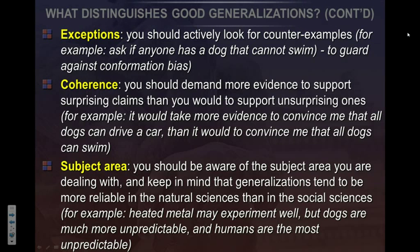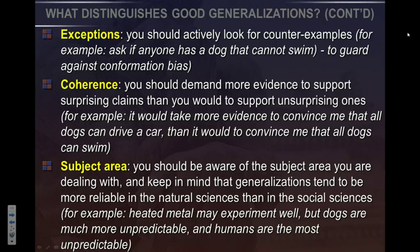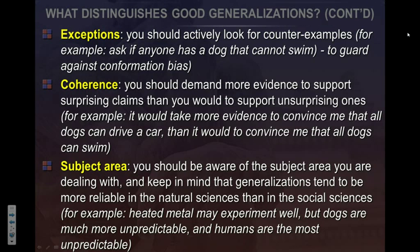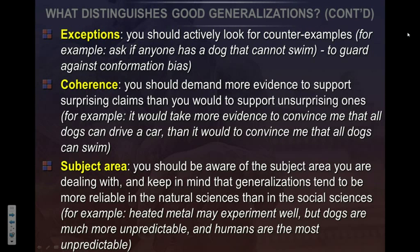And then there's coherence — does it make sense? Can dogs actually swim? It seems to make sense; they appear to have the musculature and genetics to do it. But if you said 'all dogs can drive cars,' that doesn't fit, even if you've seen YouTube videos of dogs driving cars. The generalization needs to pass multiple tests. Also be aware of the subject areas you're dealing with — generalizations tend to be more reliable in the natural sciences than in the social sciences.